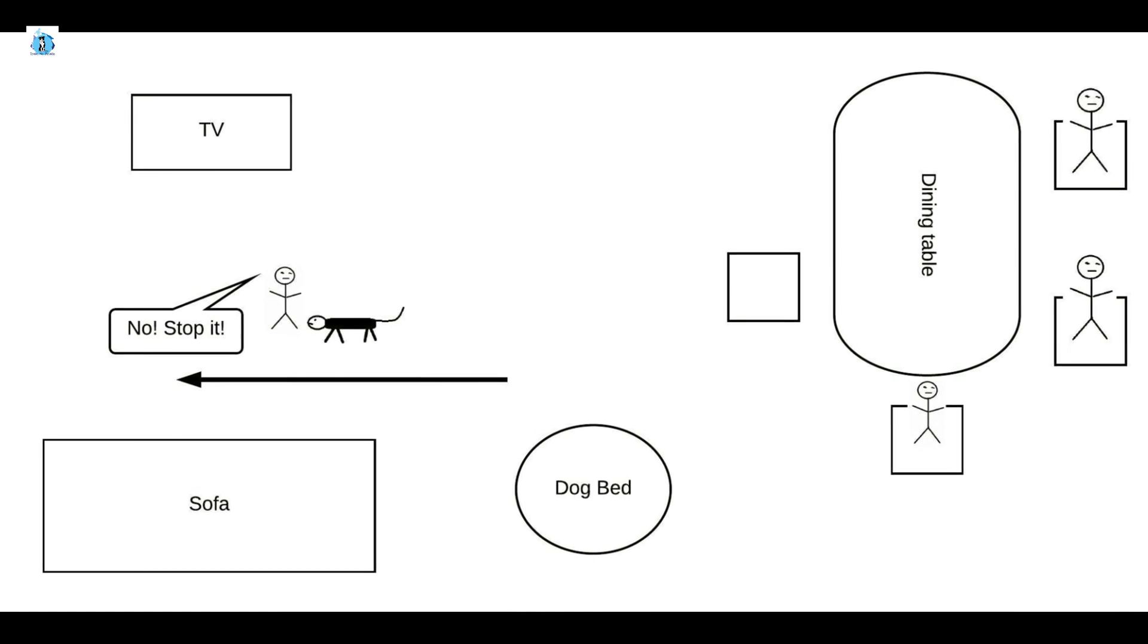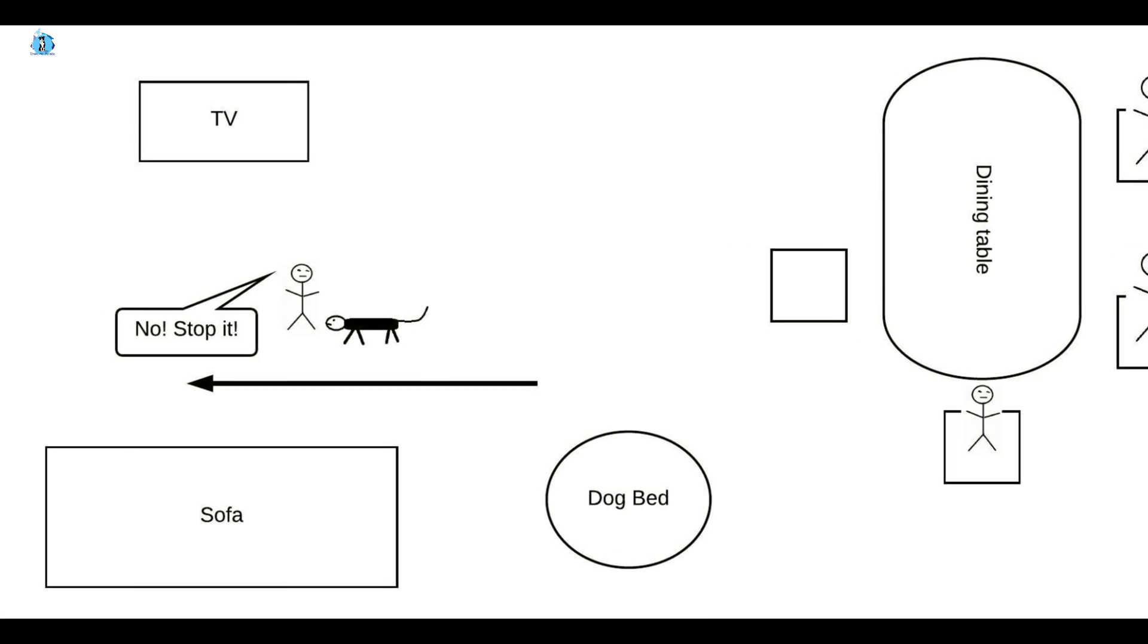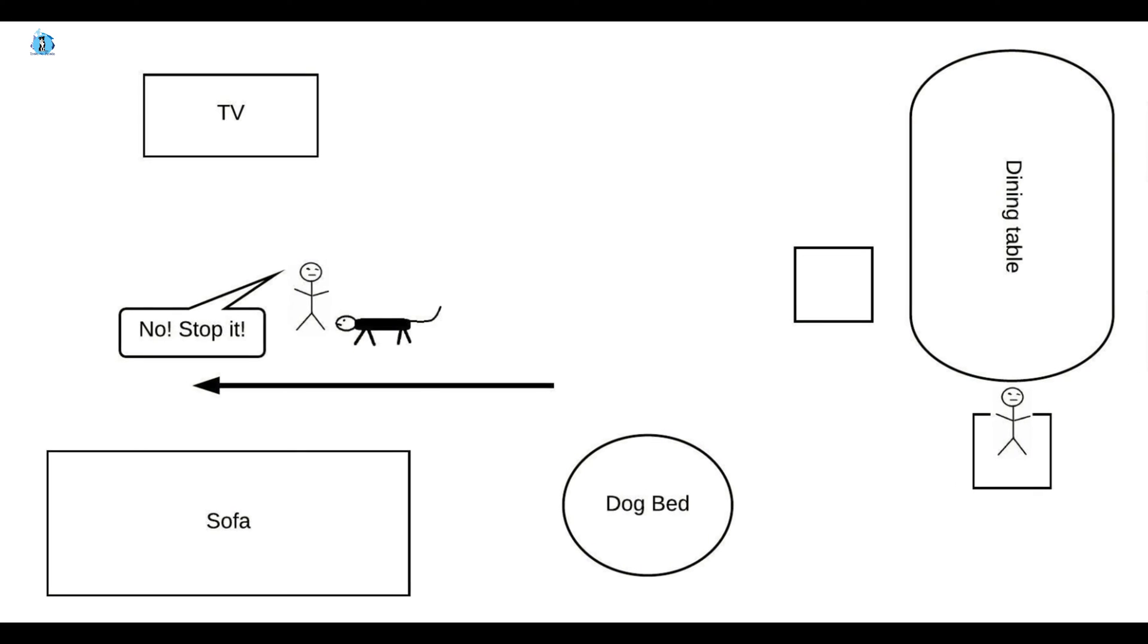Straight away, the child starts saying no, stop it and pulls away moving further along the living room as the dog is biting the pants.